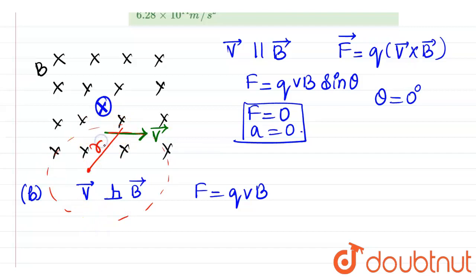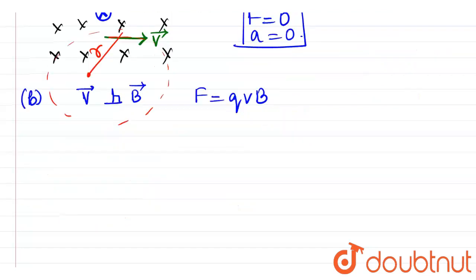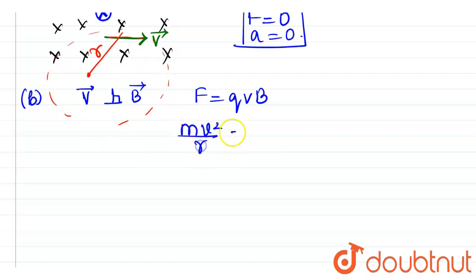And that radius of the trajectory, if at all we are supposed to find out, then we can find out the radius of the trajectory as this force, which is experienced by the given electron, will be providing the necessary centripetal force for its circular motion. Therefore, M V square divided by R will be equal to Q V B.